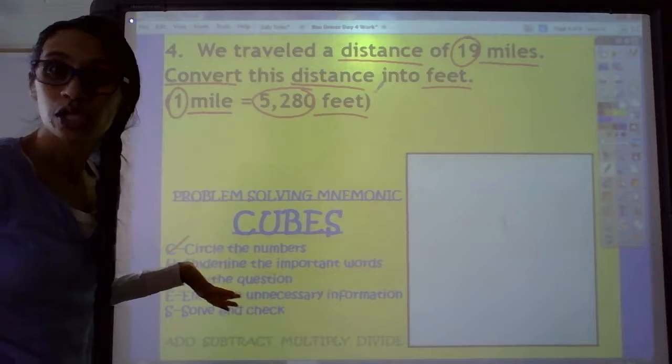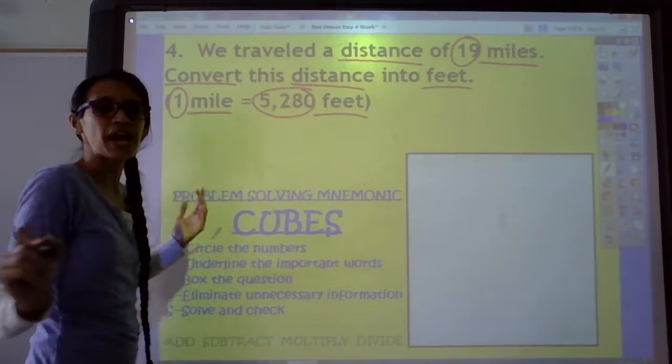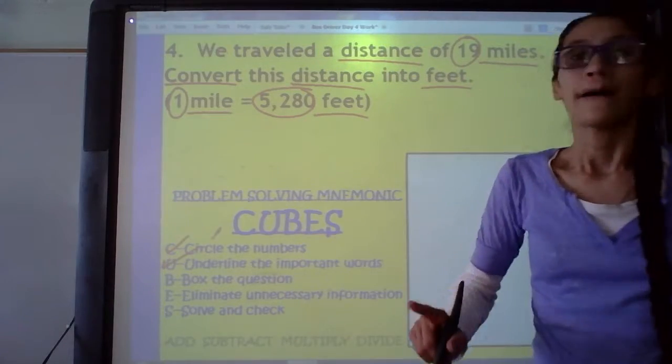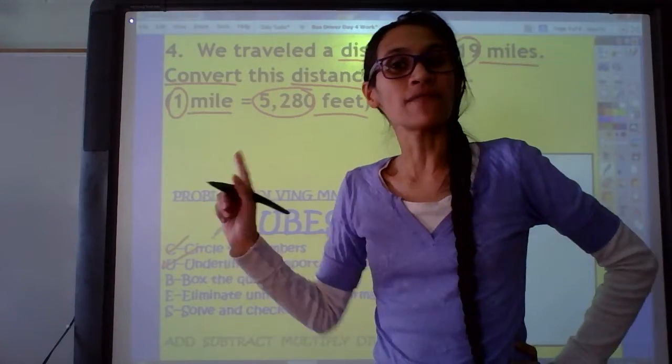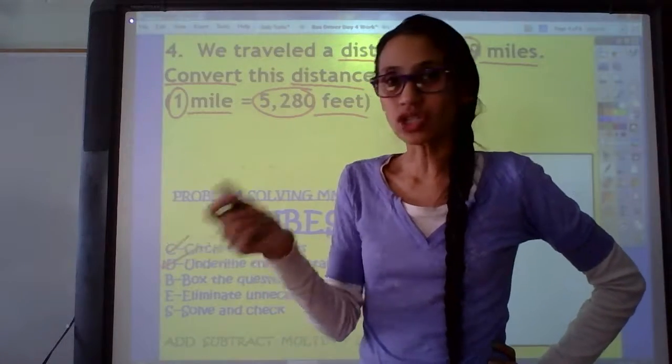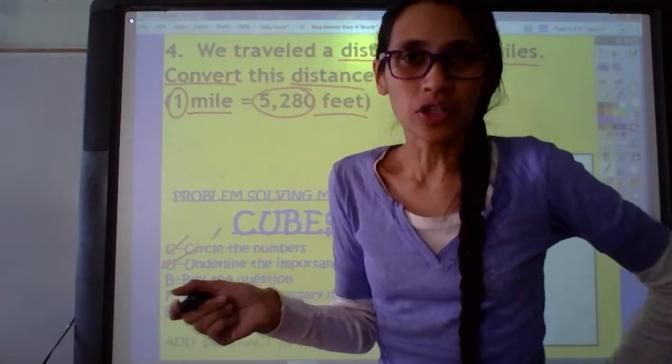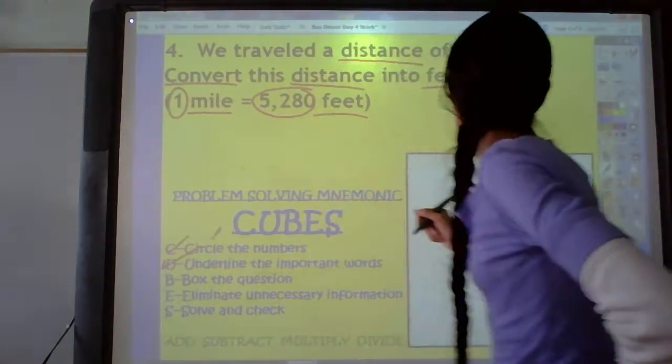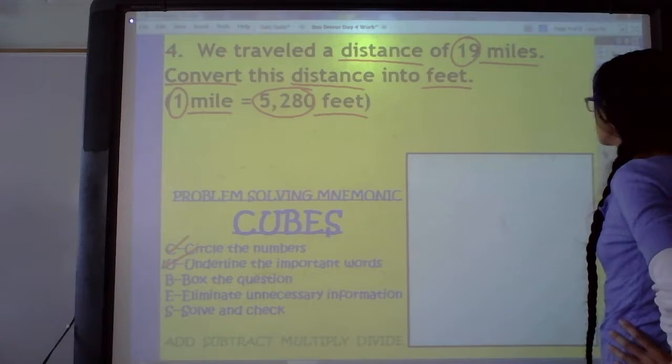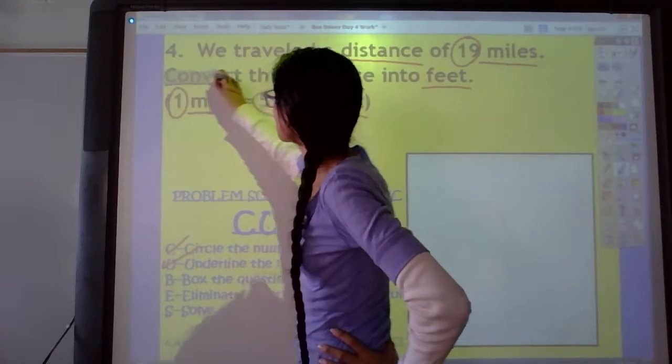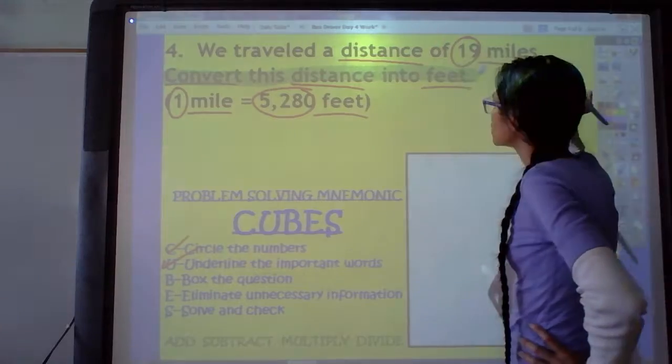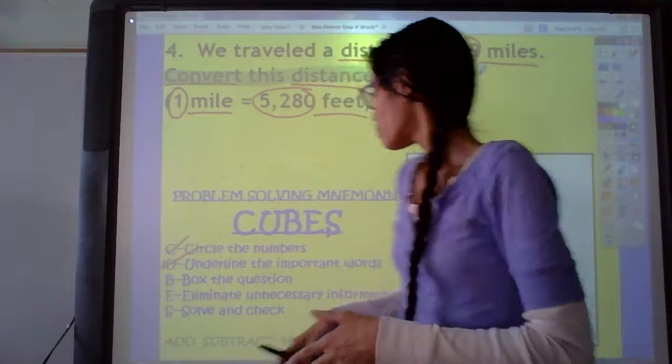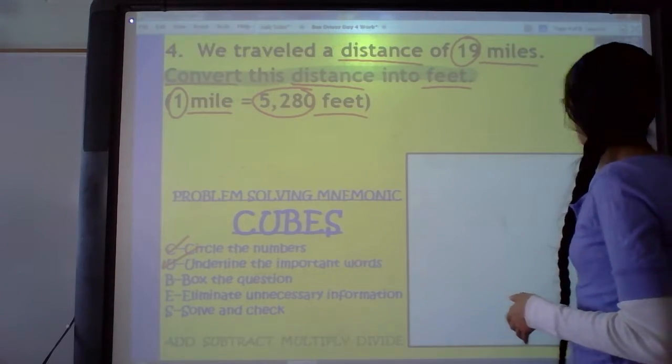And I think we're good with all our key words. Done with that step. The next step is the B step. And the B step says to do what? Box the question. Go ahead and find the question. We can box it. Highlight it. Circle it. What? There's no question. But there is something there that we need to do. And what is that? We need to convert. Convert the distance into feet. So we need to change the miles into feet. We are done with that step.